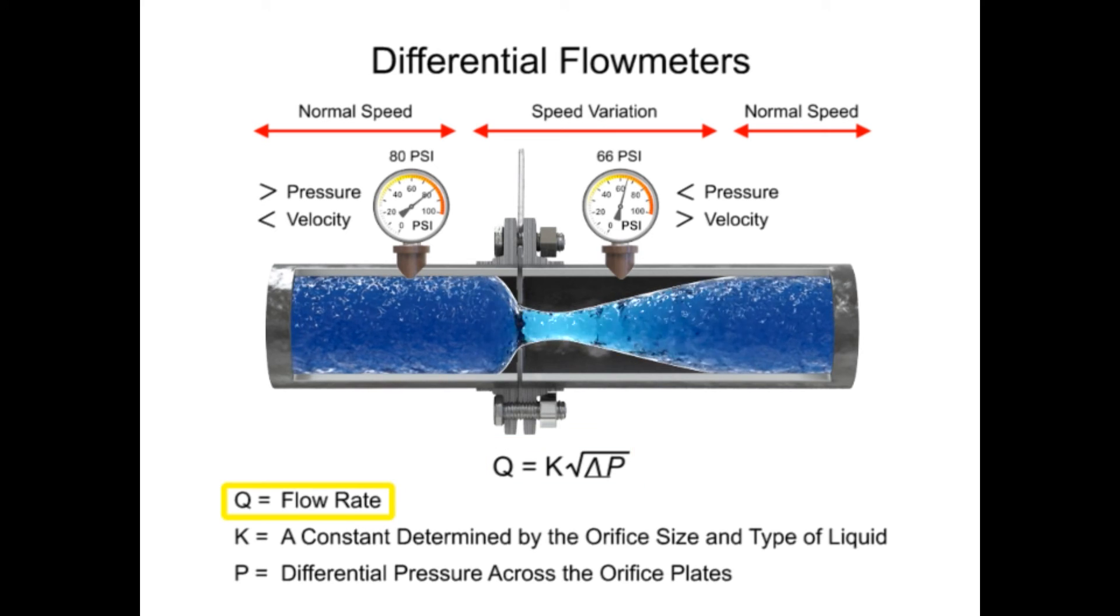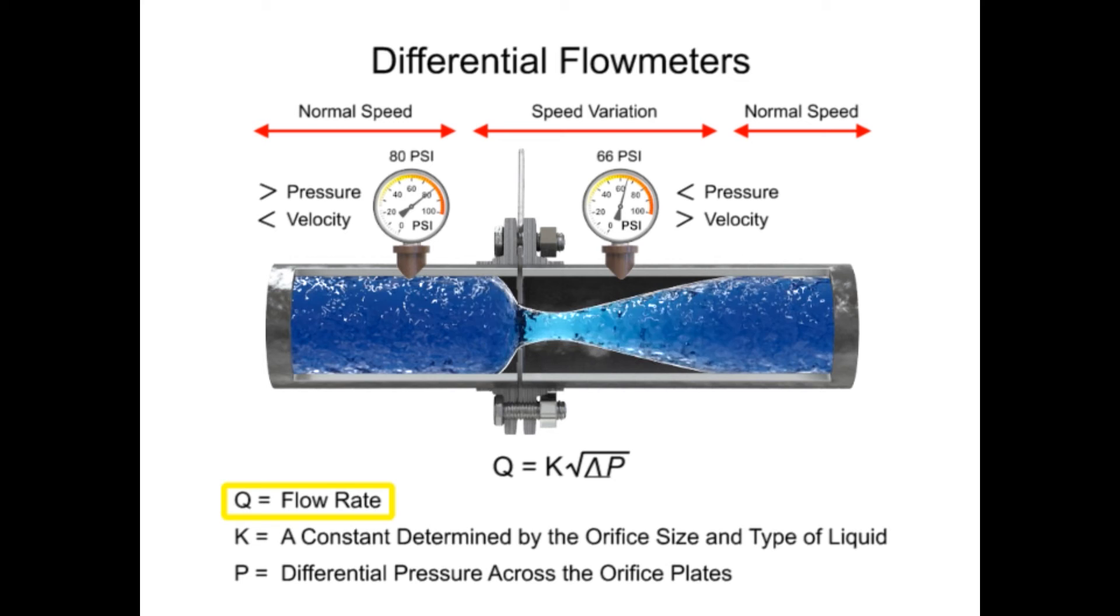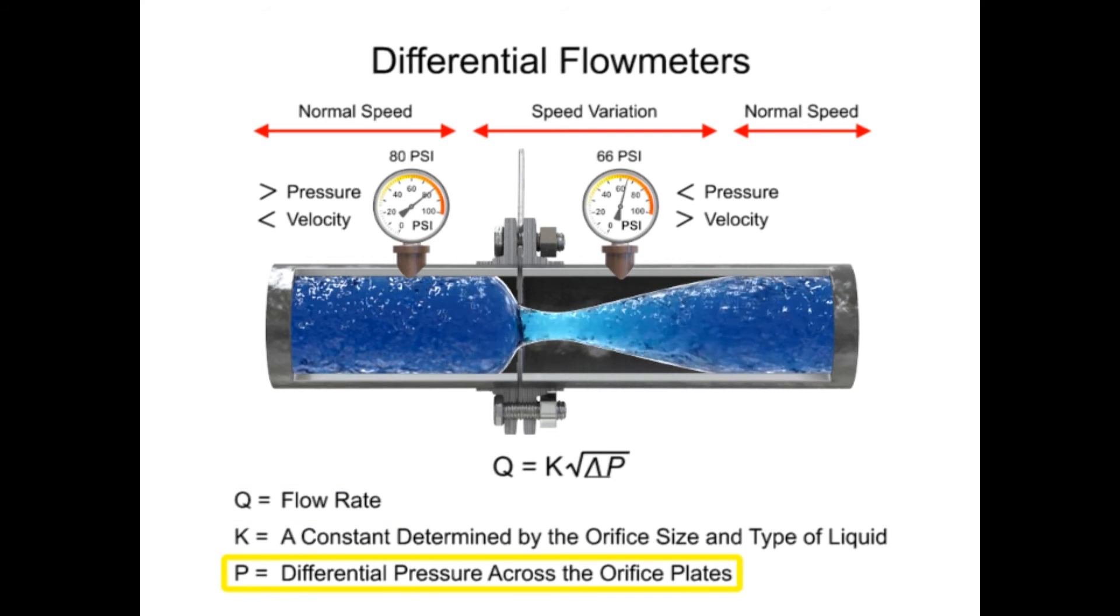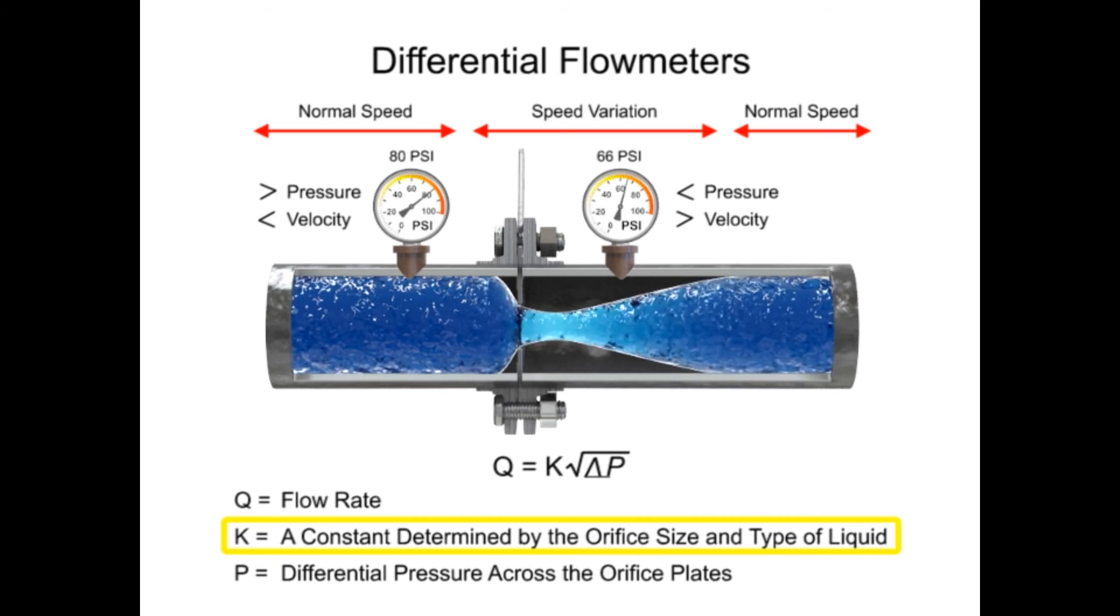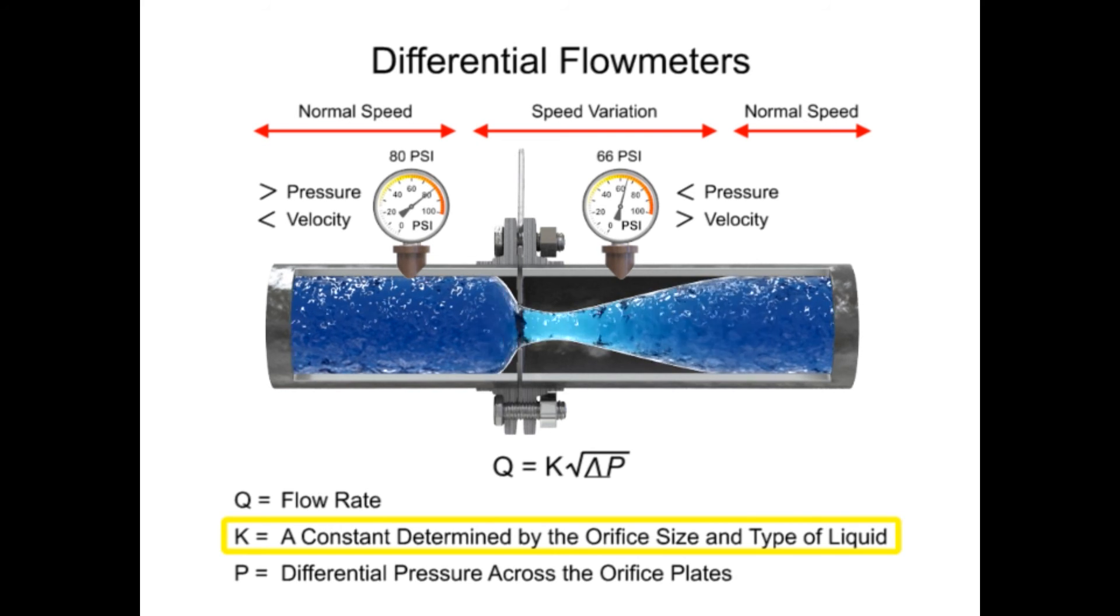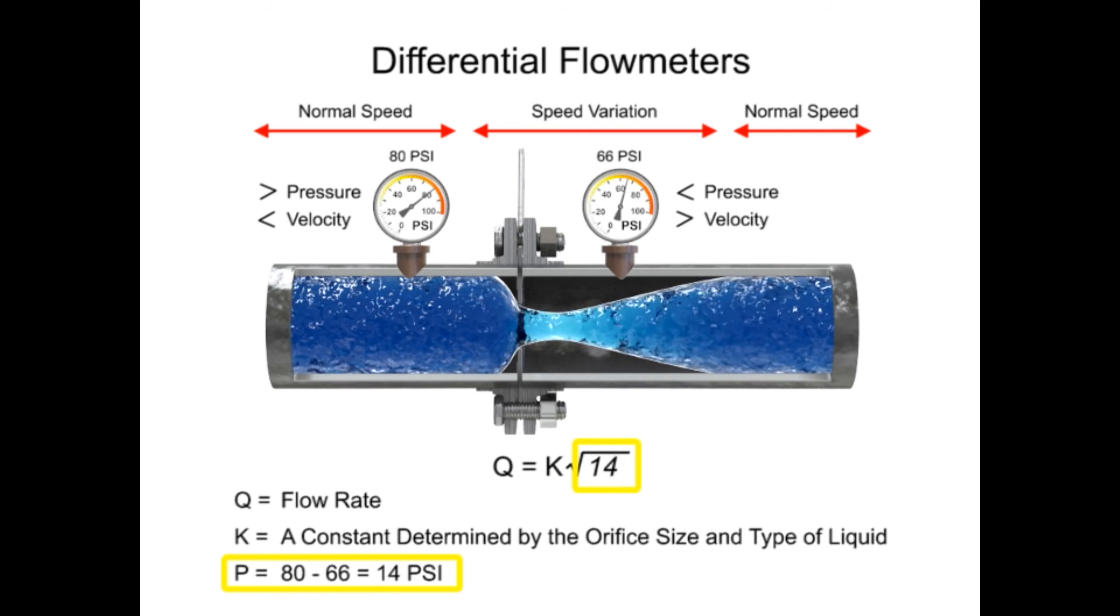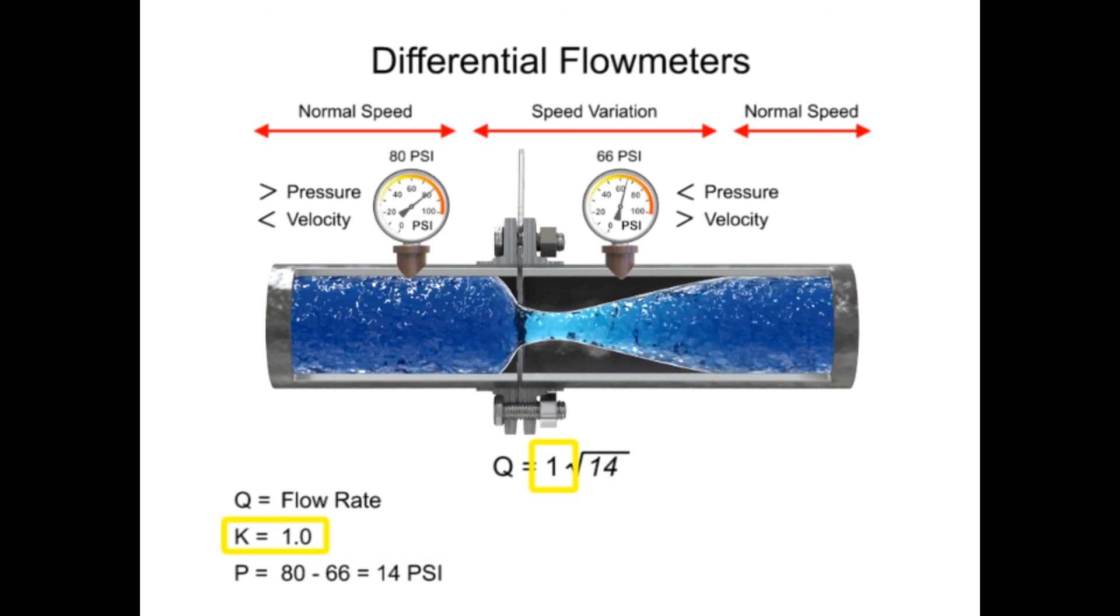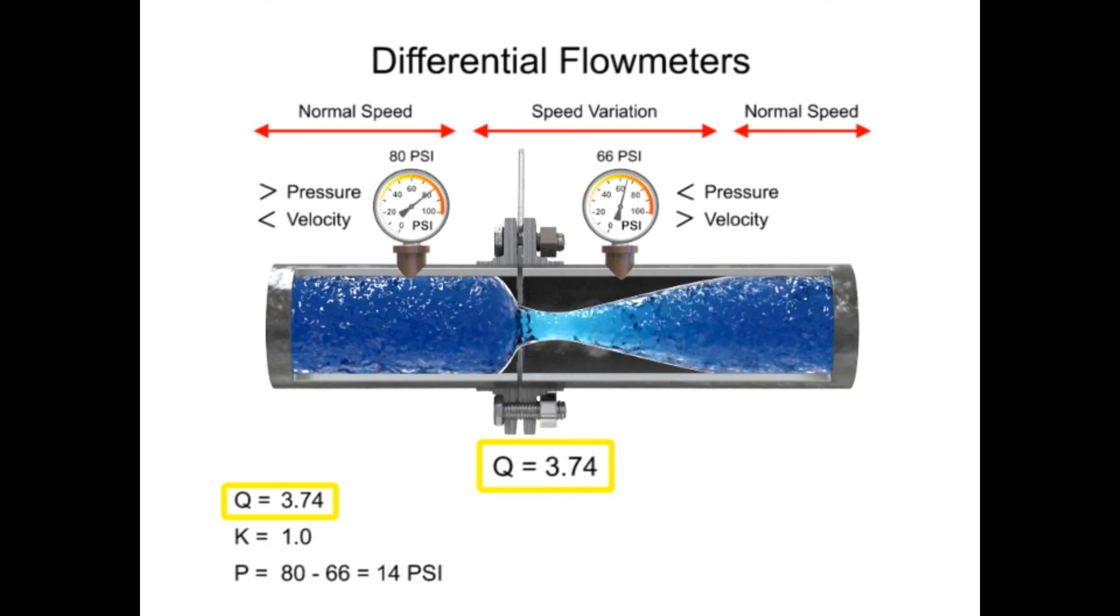The flow rate, Q, of a fluid through an orifice plate increases in proportion to the square root of the pressure difference on each side multiplied by the k-factor. For example, if the differential pressure increases by 14 psi with a k-factor of 1, the flow rate is increased by 3.74.